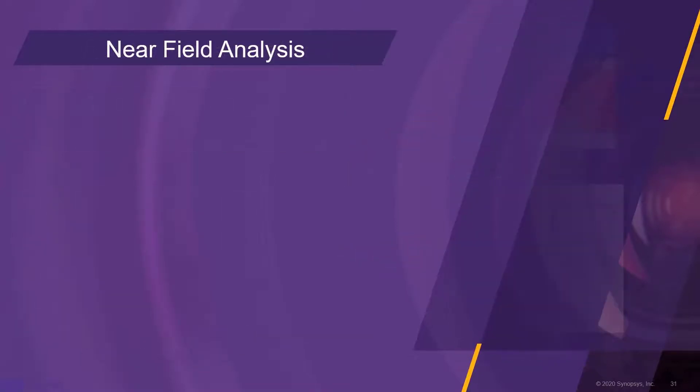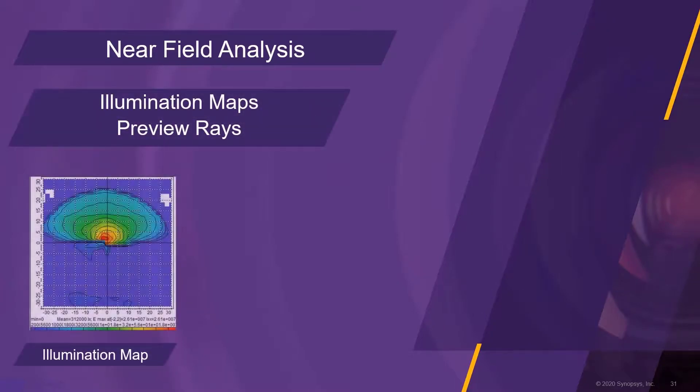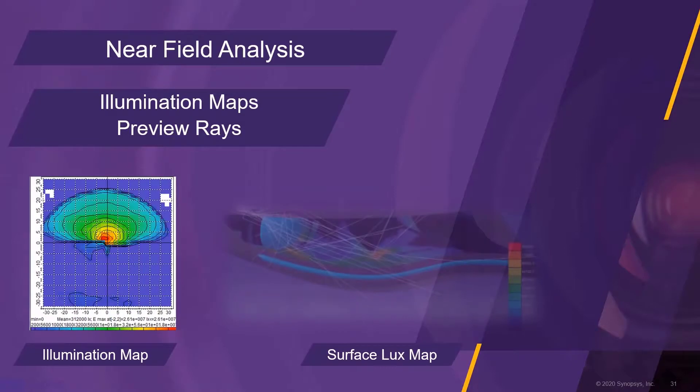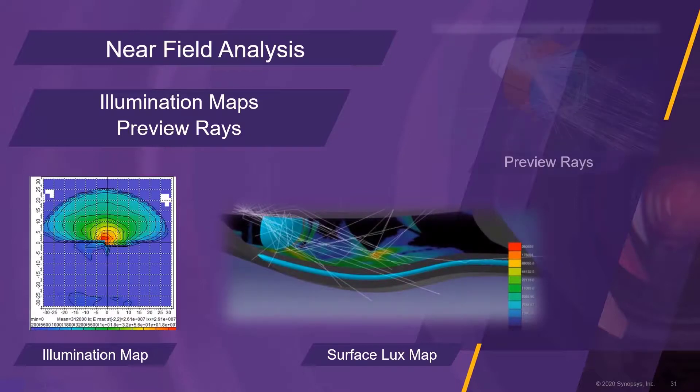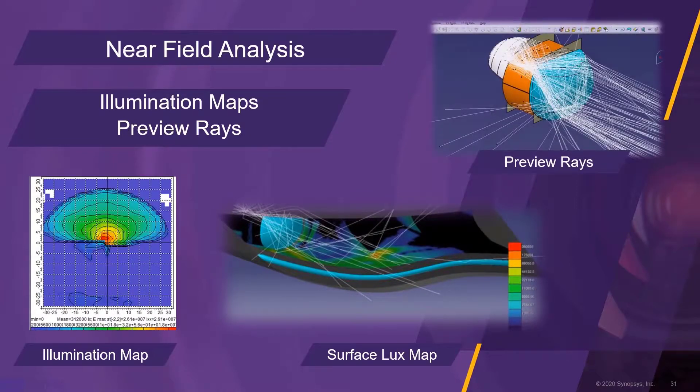For the near-field analysis, two types of illumination sensors are available. The rectangular plane sensor produces an illumination map with a typical grid and coordinate system. The surface sensor produces illumination maps directly on the free-form surface of the lamp. A third method to analyze the near-field is the usage of preview rays. These rays are ray-traced light paths displayed inside the geometry.